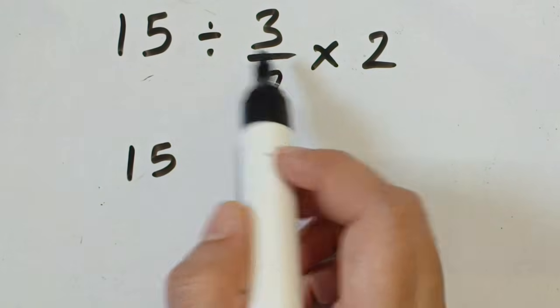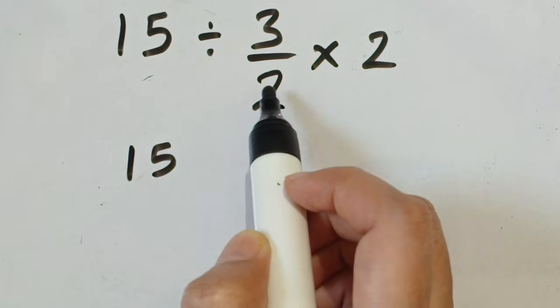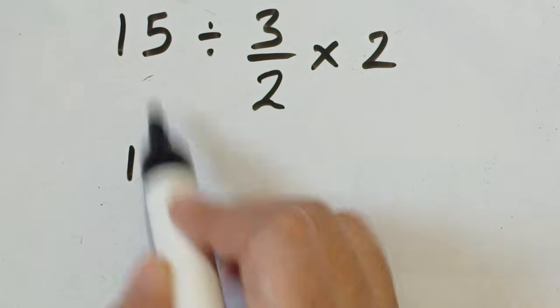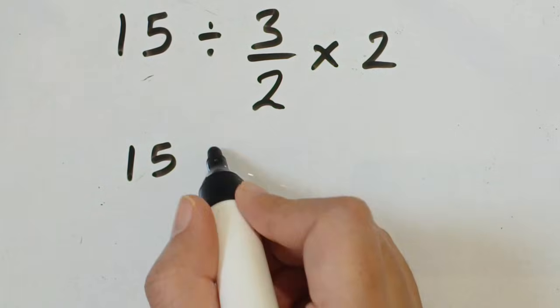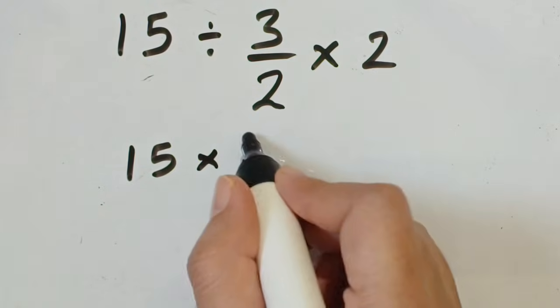In this we use the KCF rule. If in division any fraction is there, then use the KCF rule, which means we keep the first fraction as it is, change the division into multiplication, and flip the second fraction.